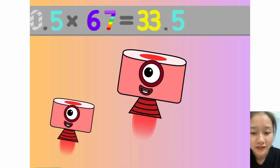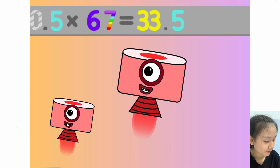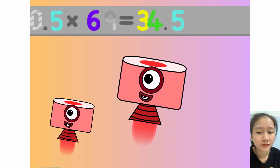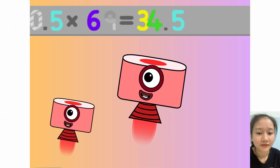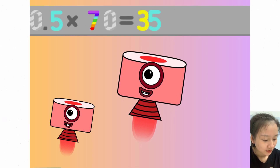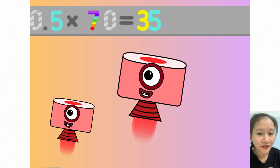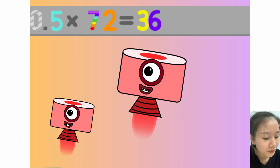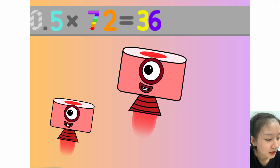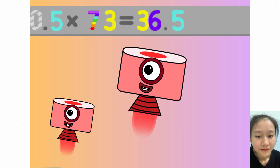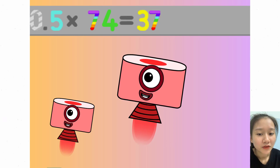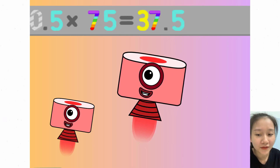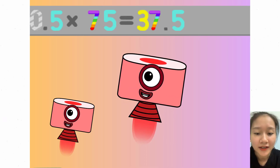0.5 times 67 equals 33.5. 0.5 times 68 equals 34. 0.5 times 69 equals 34.5. 0.5 times 70 equals 35. 0.5 times 71 equals 35.5. 0.5 times 72 equals 36. 0.5 times 73 equals 36.5. 0.5 times 74 equals 37.